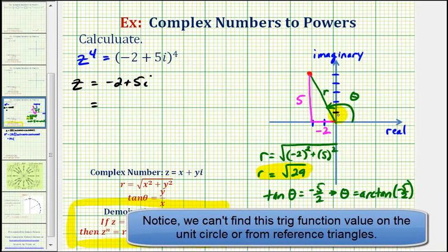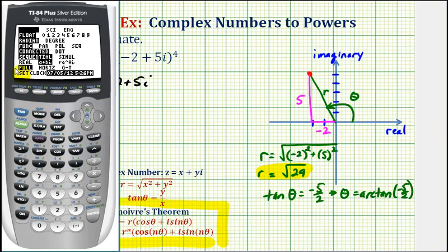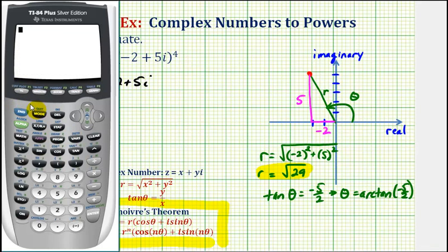But keep in mind that our angle theta must be in the second quadrant. So now we'll go to the calculator — make sure we're in radian mode, which we are. Notice how the calculator is giving us an angle in the fourth quadrant; it's approximately negative 1.1903 radians.